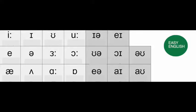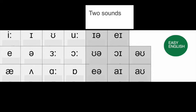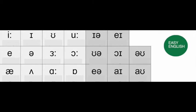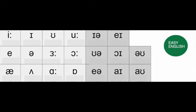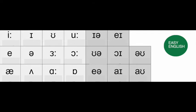There are also double sound vowels, where you push two sounds together. Some of them end in 'w', others in 'y'. Some examples are 'i', 'a', 'o'.